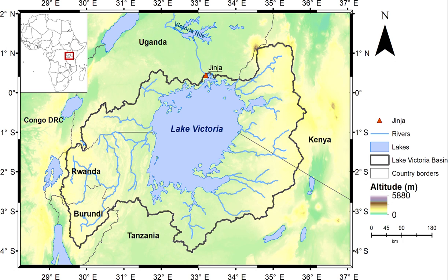The lake is home to many species of fish that live nowhere else, including cichlids. Invasive fish, such as the Nile perch, have led to the extinction of many endemic species.